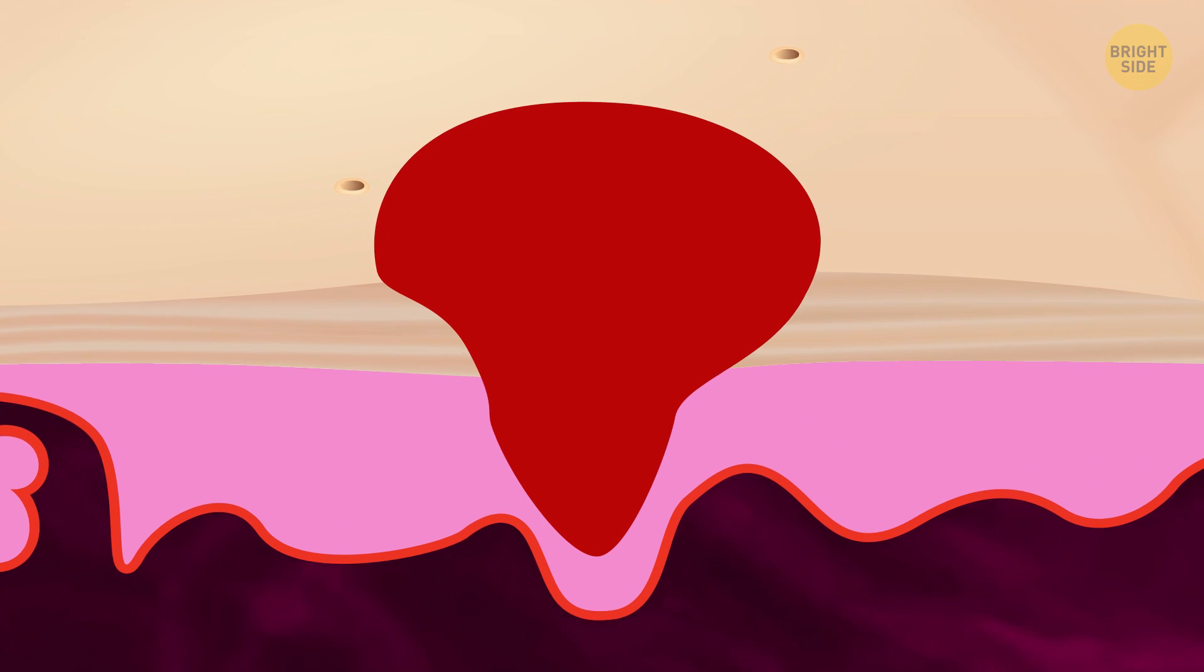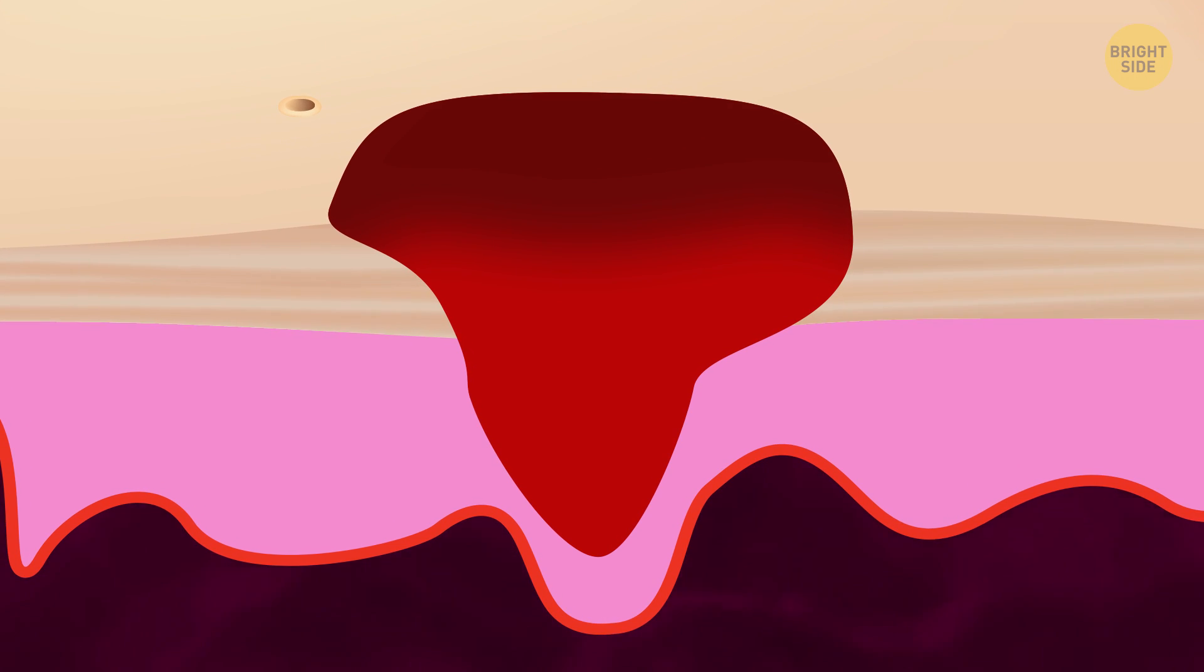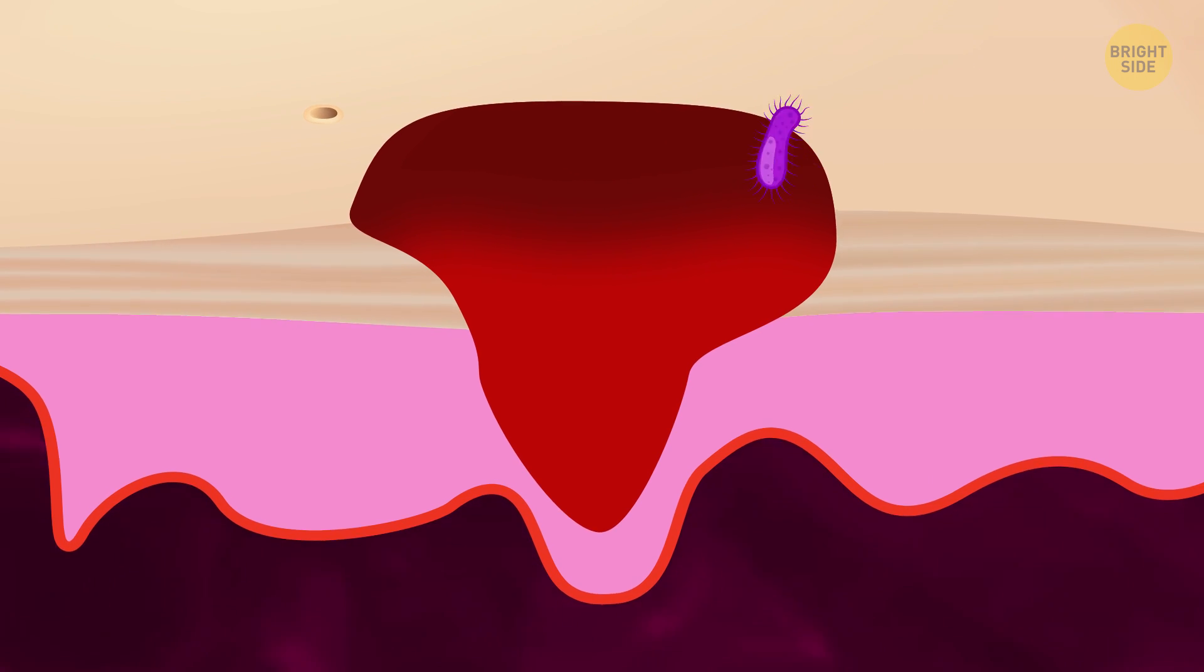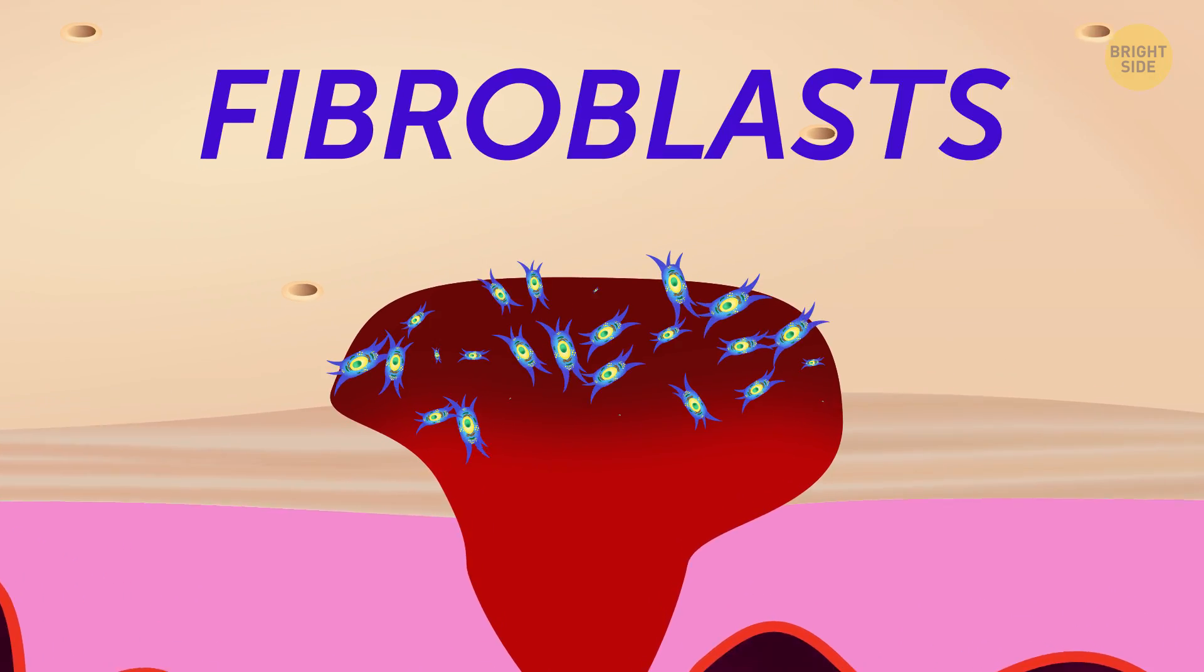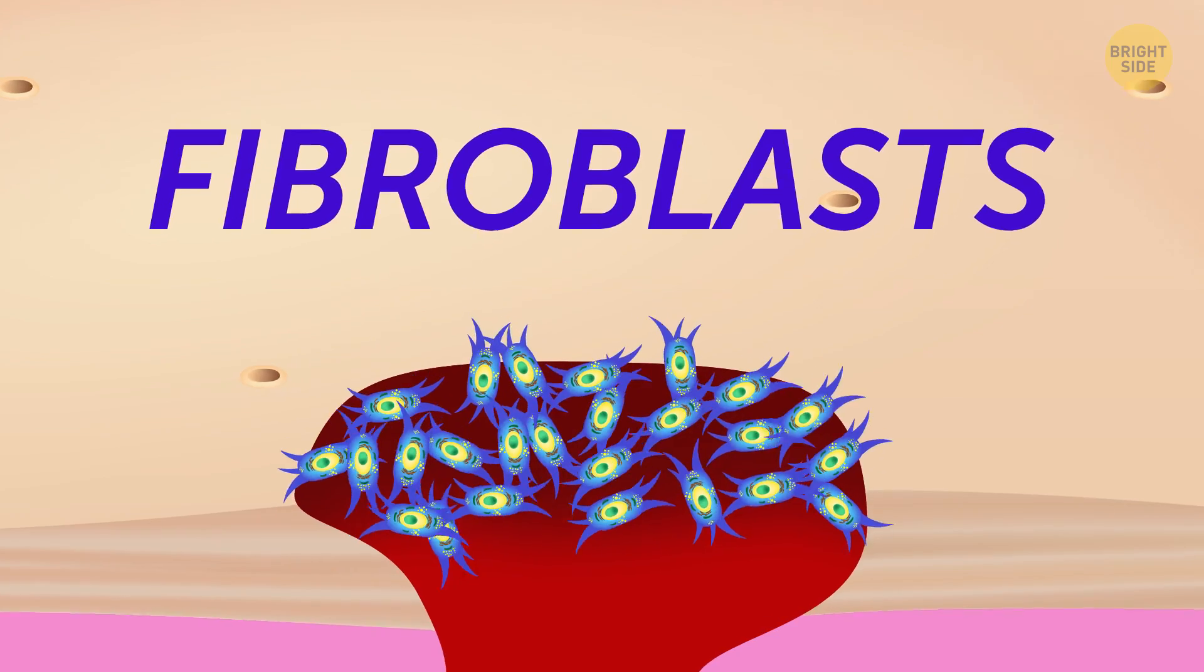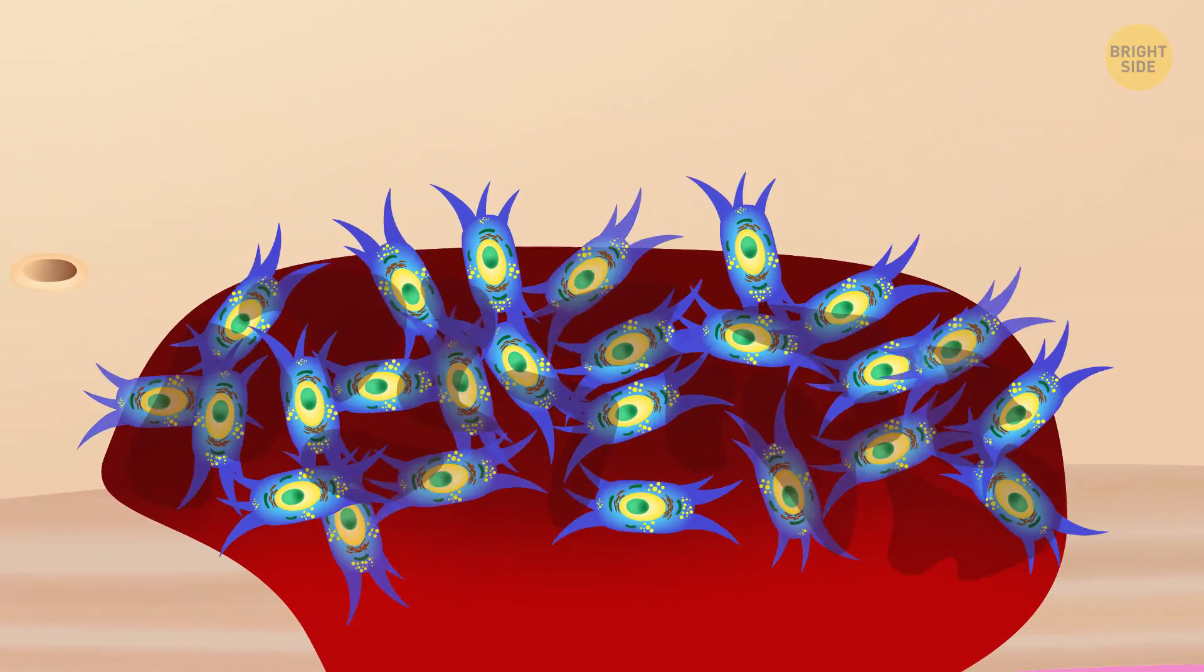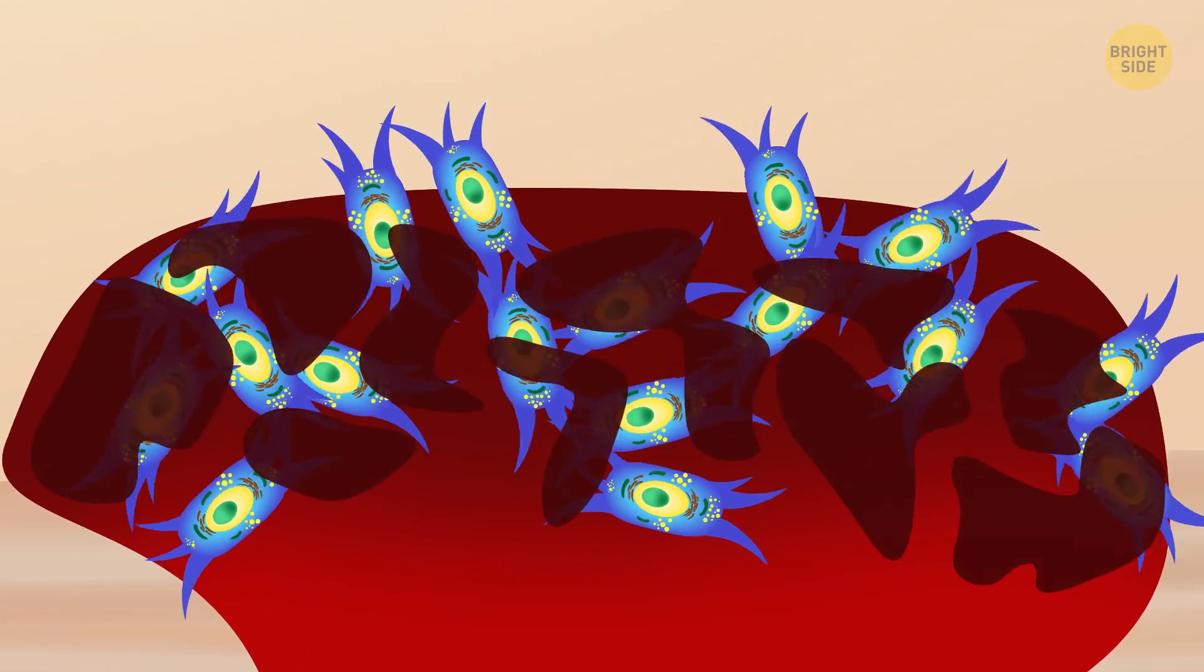When we get hurt, the wound is covered with a blood clot. This shell gets hard outside to protect the body from foreign organisms. Then microblasts appear inside the clot. These guys repair the wound with scar tissue. And the scar tissue is important here.